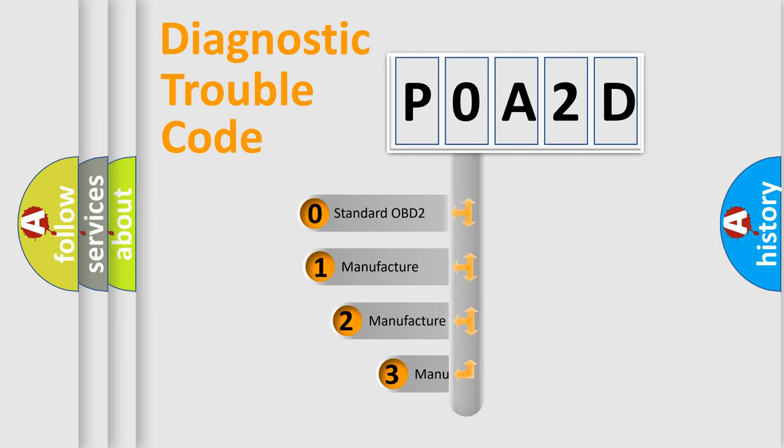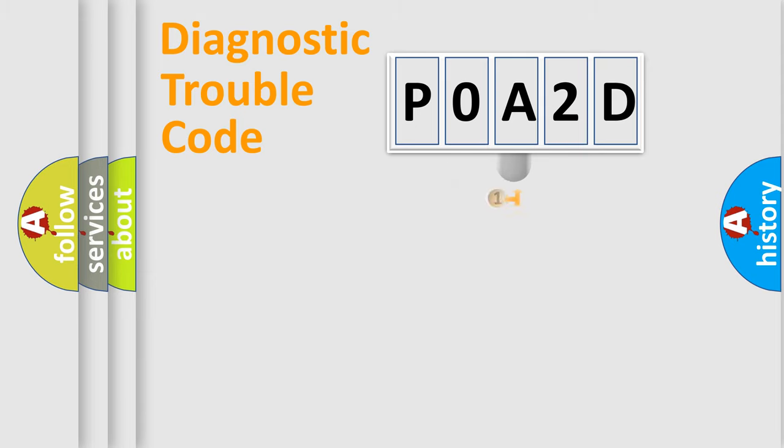If the second character is expressed as zero, it is a standardized error. In the case of numbers 1, 2, or 3, it is a manufacturer-specific expression of the car-specific error.